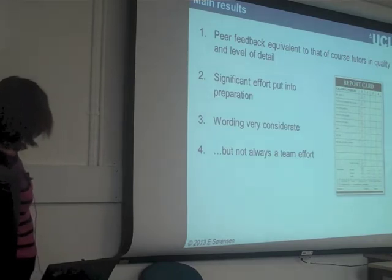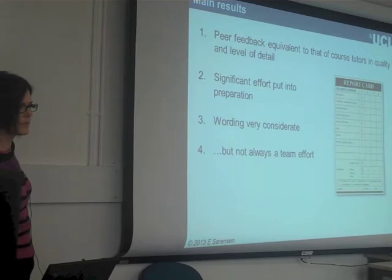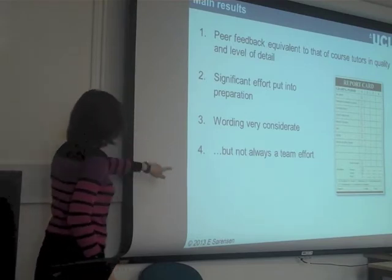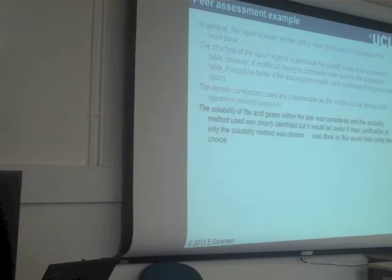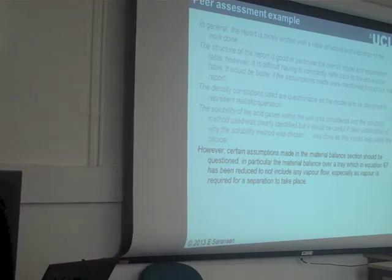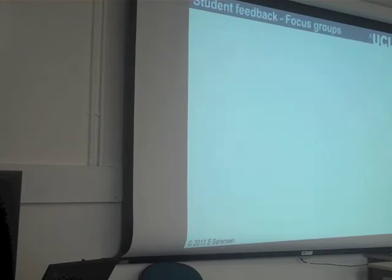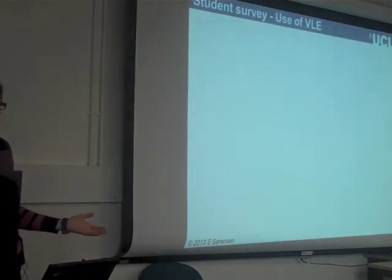What we've found mainly is that the peer feedback is equivalent to what we can put together in terms of quality and level of detail. Sometimes they pick up on things we haven't spotted because they are working on similar plants, so they are looking at it even more carefully than we do. They put quite a lot of effort into the preparation of this and the wording is quite considerate. It isn't always a team effort — sometimes it has been done by only one or two people. The feedback focuses heavily on technical issues, such as questioning density correlations, picking up on technical aspects of the work.